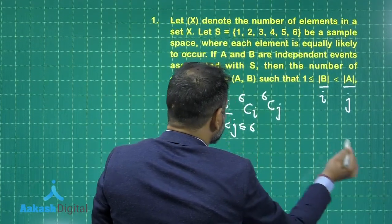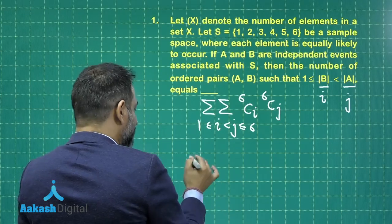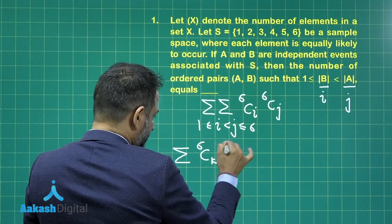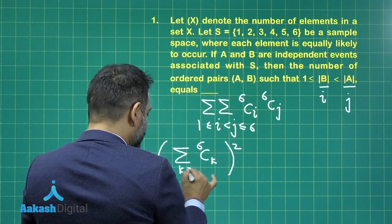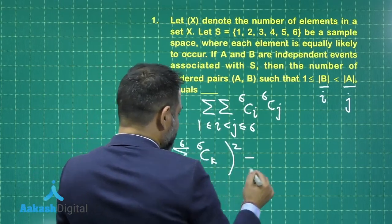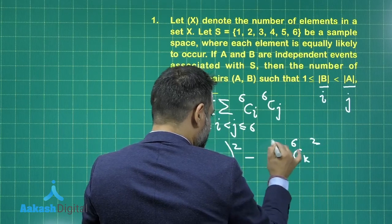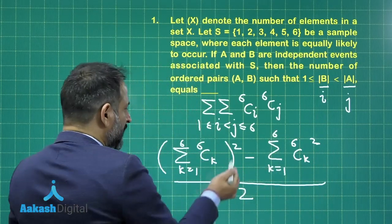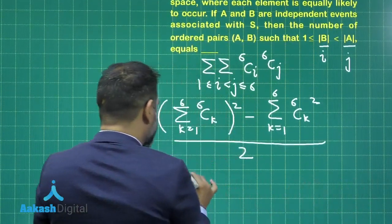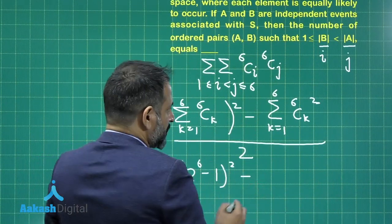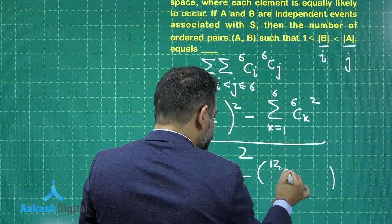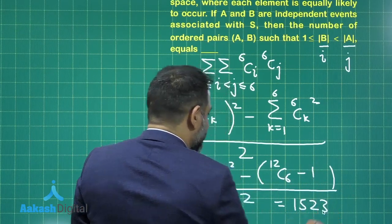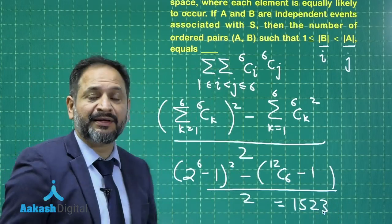Summing this series — it will be sigma of (6Ck)² where k goes from 1 to 6, minus (6Ck)² where k again goes from 1 to 6, all divided by 2. The value of this is 2 raised to the power 6 minus 1, so the value is 12C6 minus 1, whole divided by 2. Calculating this, the value comes out to be 1523, which is the correct answer.